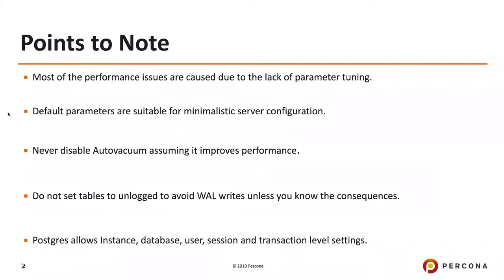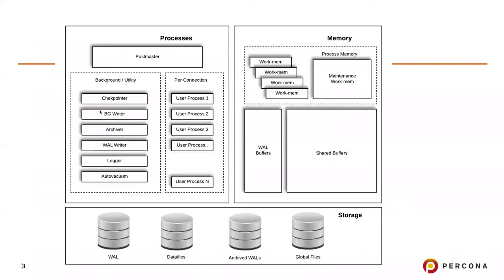Postgres allows instance-level, database-level, user-session, and transaction-level settings. Some parameters you set globally take effect for every user, every session, and every query. But you could set many parameters at the database level, user level, or session level. You need to know how to limit the overall impact of a setting to a transaction or session. Now we'll quickly look at an architecture diagram of Postgres so that we can get started with the parameters.